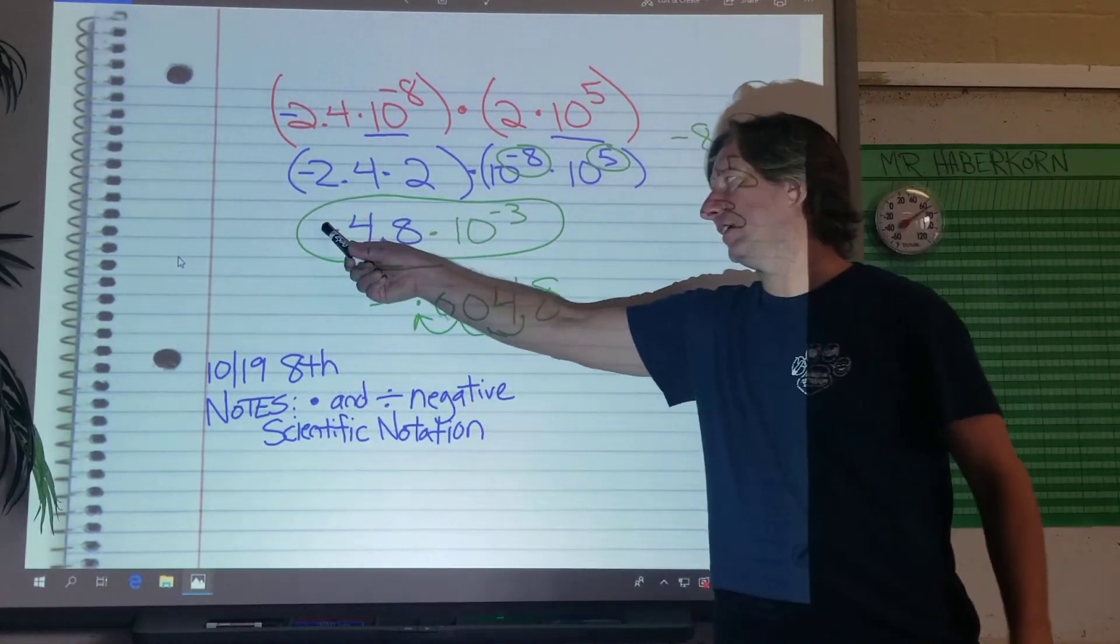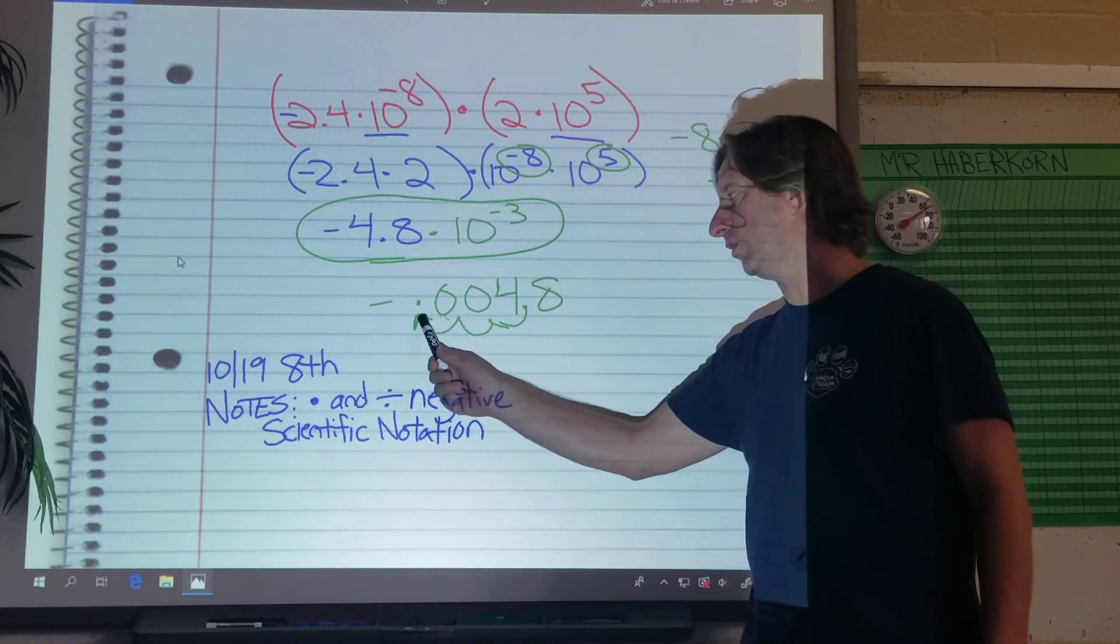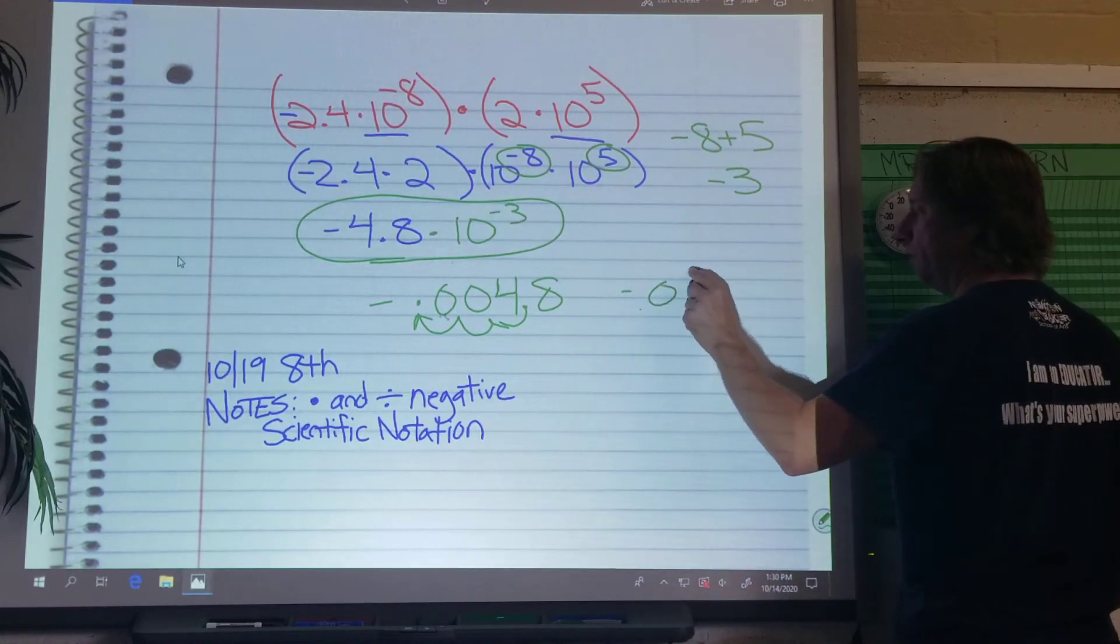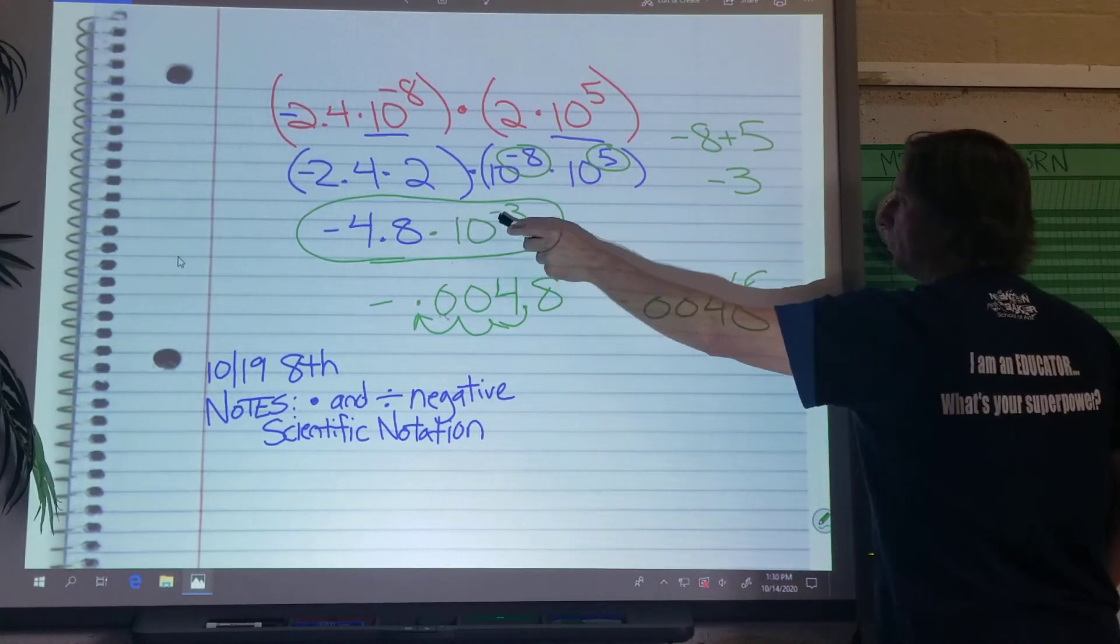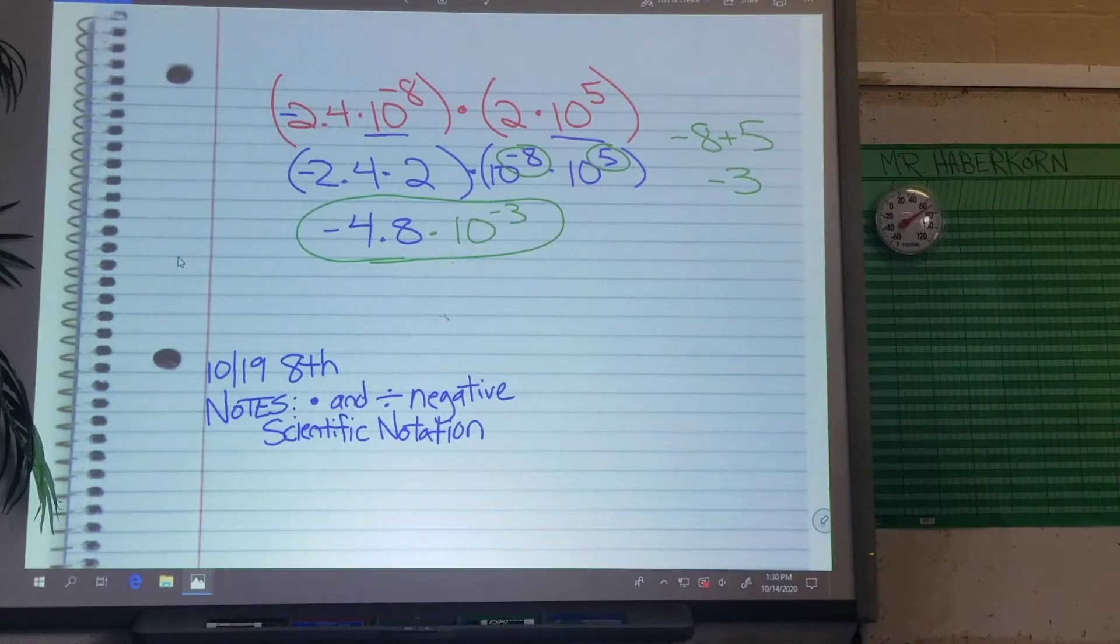It's only negative because of this, not because of this. This just tells you which way to move the point, right? 1, 2, 3 spaces. So there it is. Negative 0.0048. This is standard form. This is scientific notation, right? Okay, good. Pretty easy, right?